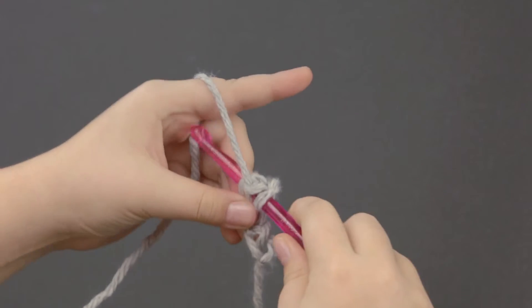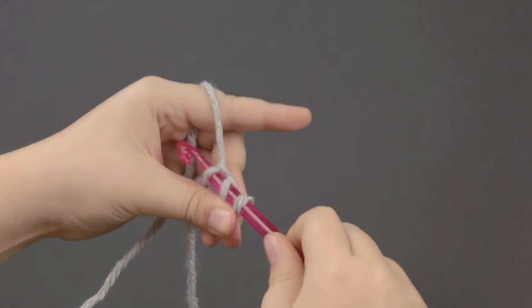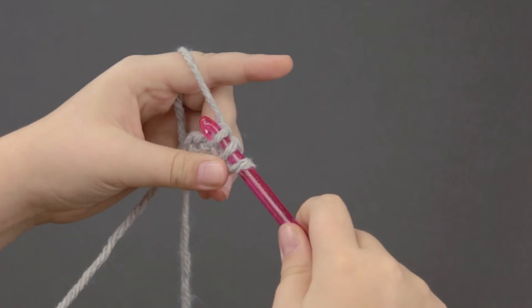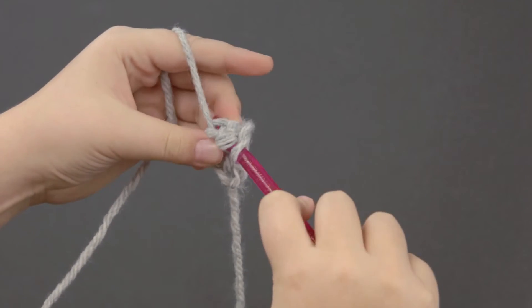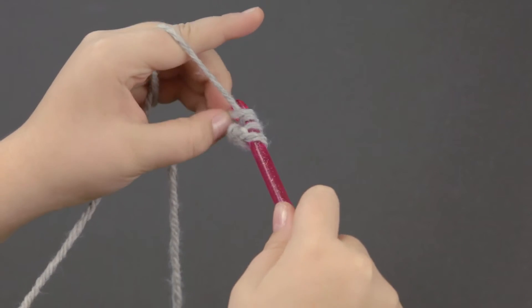So you're going to insert it into the third one, catch the yarn, and pull it through. Fourth one, catch the yarn, and pull it through.